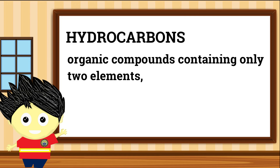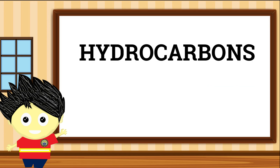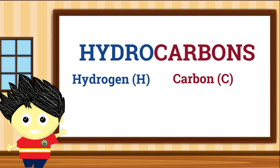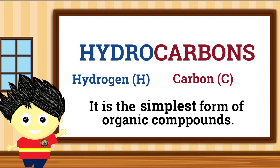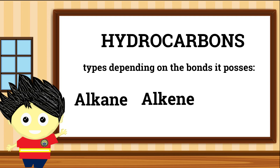Hydrocarbons are organic compounds containing only two elements: hydrogen and carbon. Kung pasisimplihin natin mabuti mula sa pangalan ng uri ng organic compound na ito, which is hydrocarbons, ito ay hinango sa pinagsamang hydrogen at carbon. Ito ang pinakasimpleng uri ng organic compound. Mayroon tayong tatlong uri ng hydrocarbons depende sa type of bonds na mayroon sa structural formula nito. Ang mga ito ay ang alkane, alkene, at alkyne.